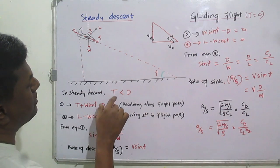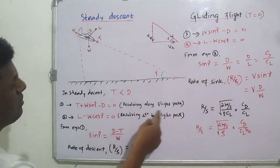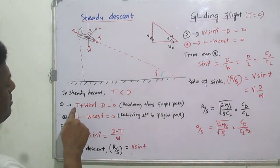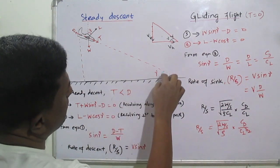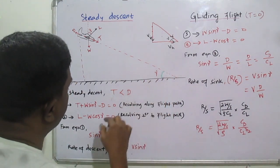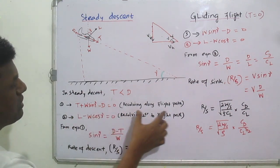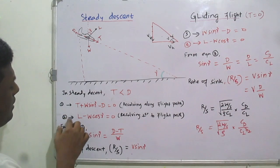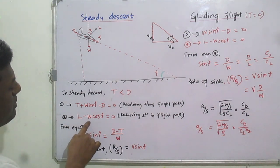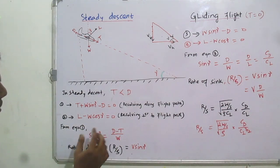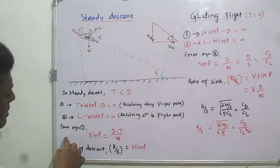Similar to climbing flight, we have vertical and horizontal velocity components. The vertical velocity here is called the rate of descent — analogous to the rate of climb in climbing flight. Now, for the equations of motion in steady descent, resolving forces along the flight path gives: T + W sin γ − D = 0.